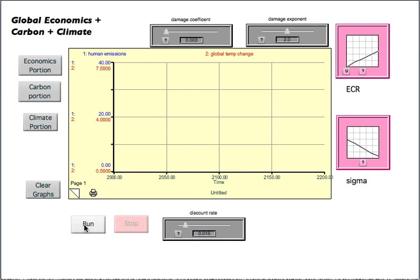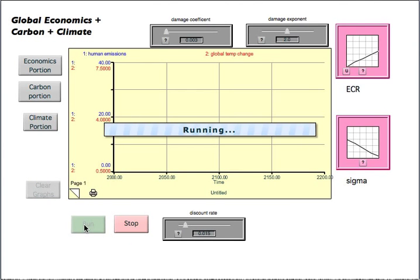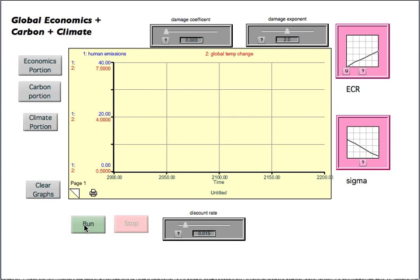And then you're going to run the model. And when you run it, you see it gives you all sorts of outputs after a while, including human emissions, global temperature.